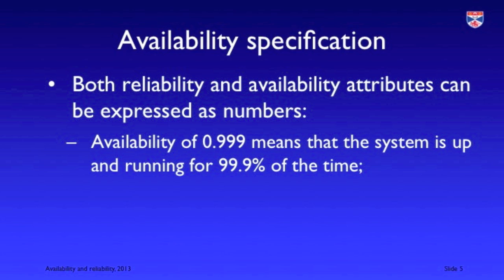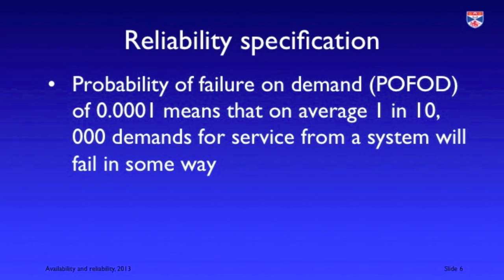What's very important about these definitions is that they are expressed as probabilities. An availability of 0.999 means that the system is up and running for 999 out of a thousand time units. A reliability metric we use is probability of failure on demand. A probability of failure on demand of 0.0001 means that one in 10,000 demands will result in a system failure of some kind.